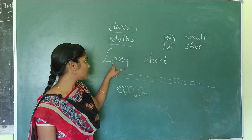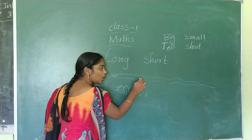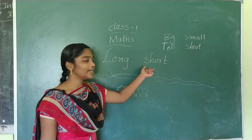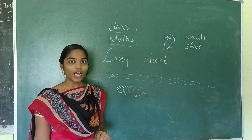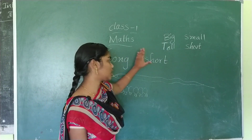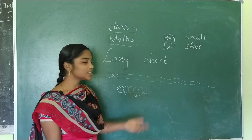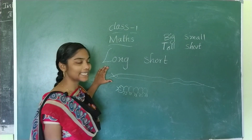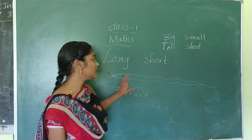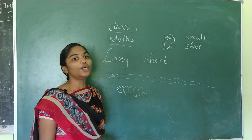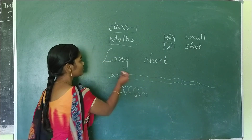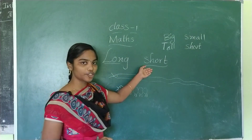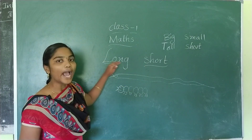Long and short. Long means lengthy, short means small in length. Here we have two pictures — the snake and the caterpillar — showing long and short.